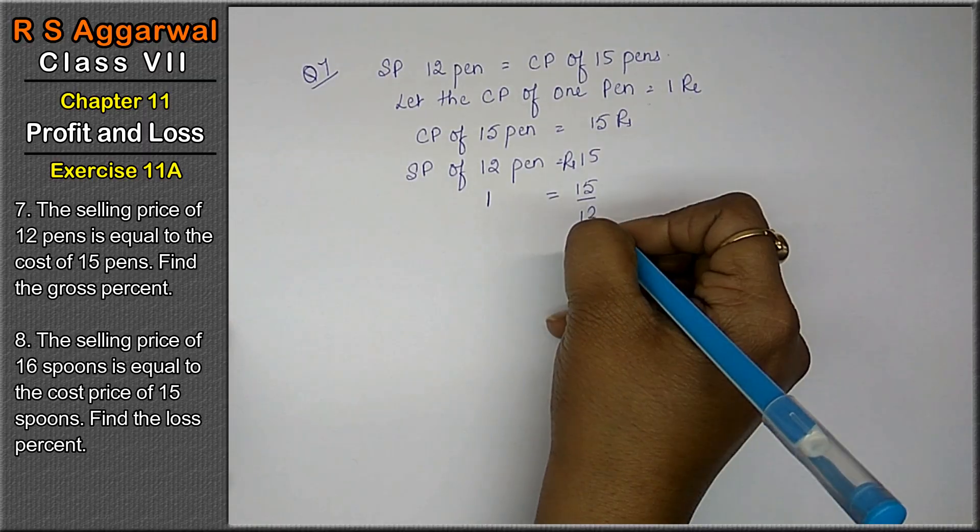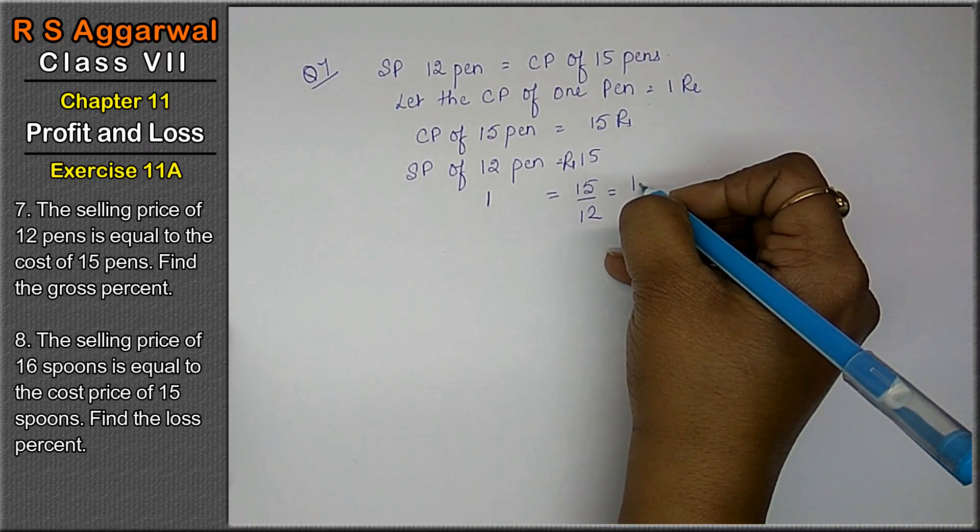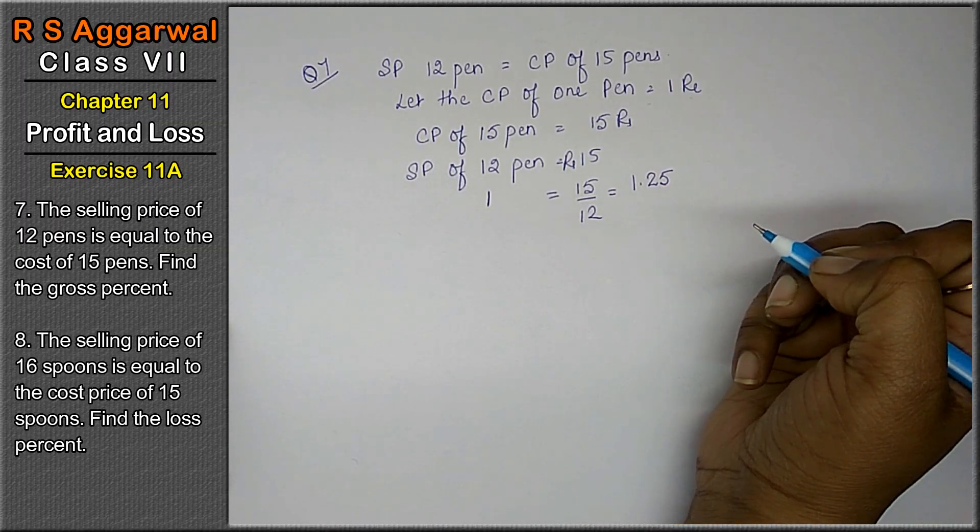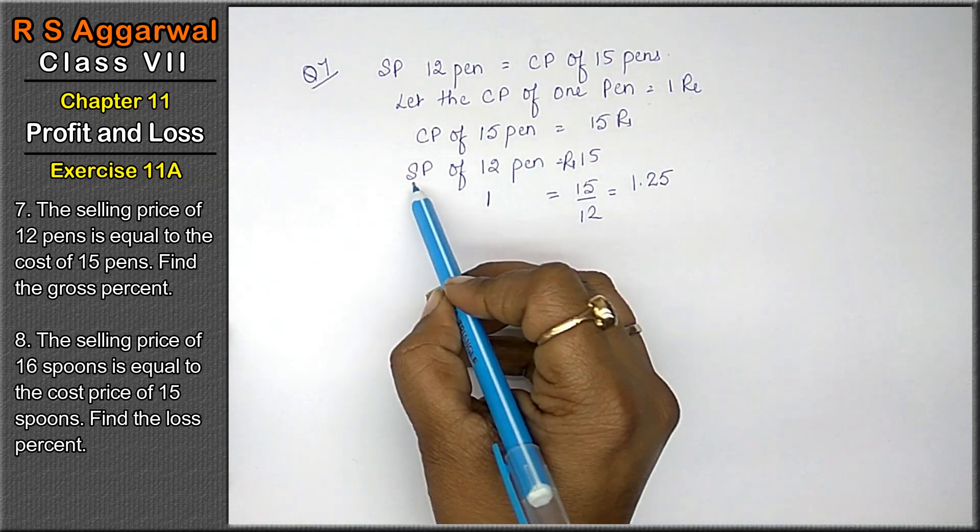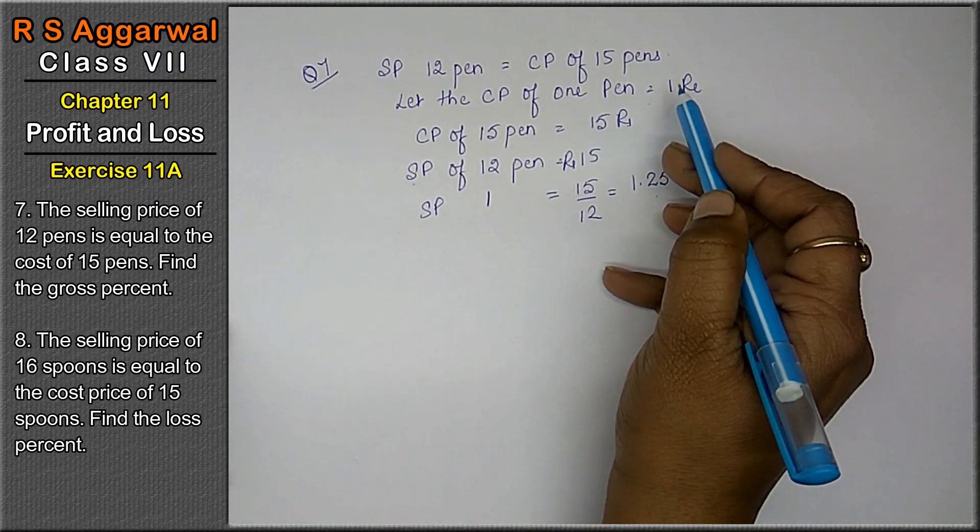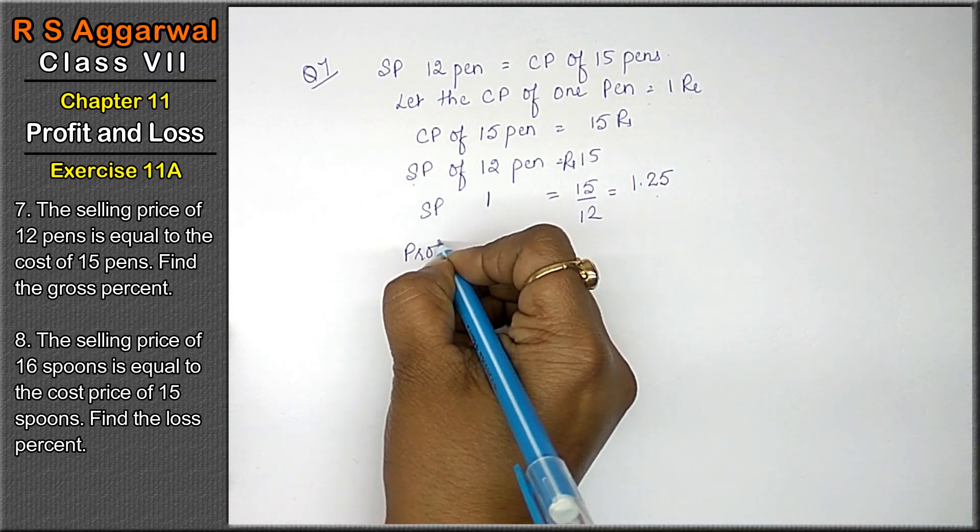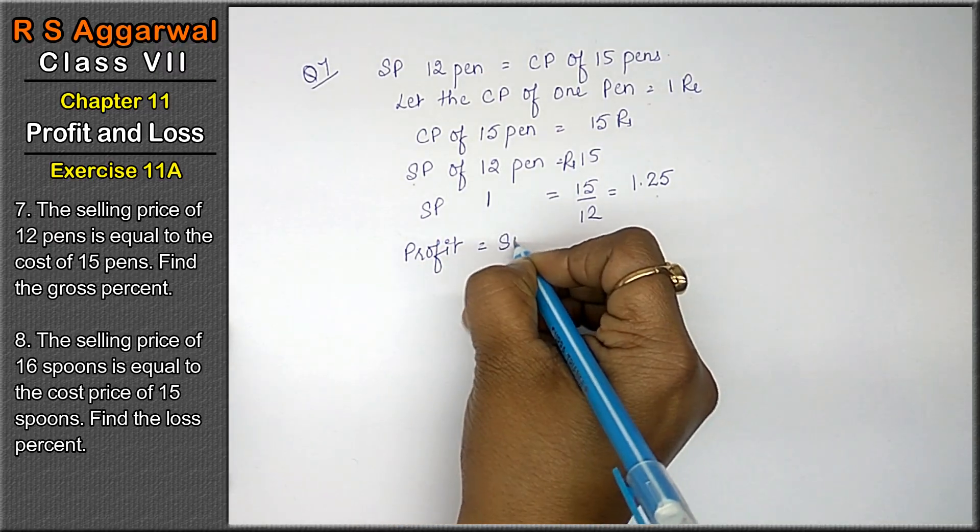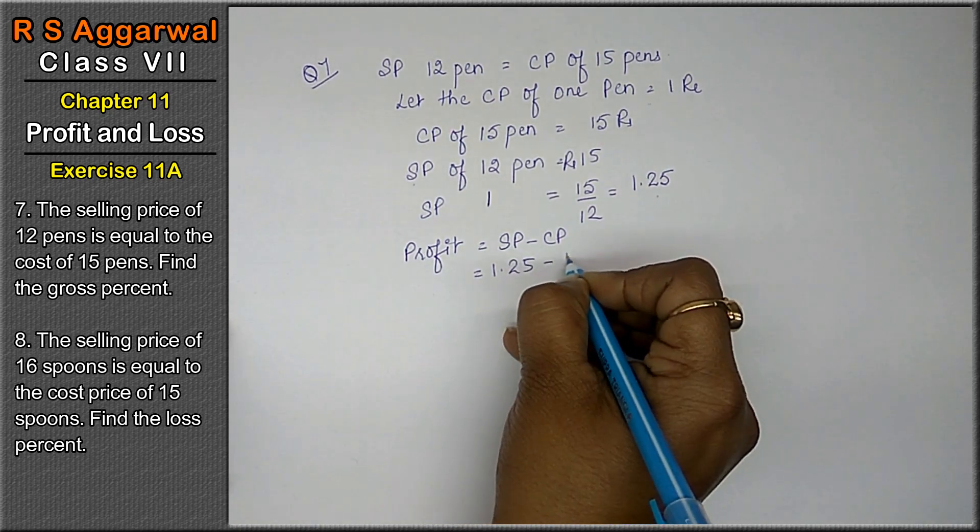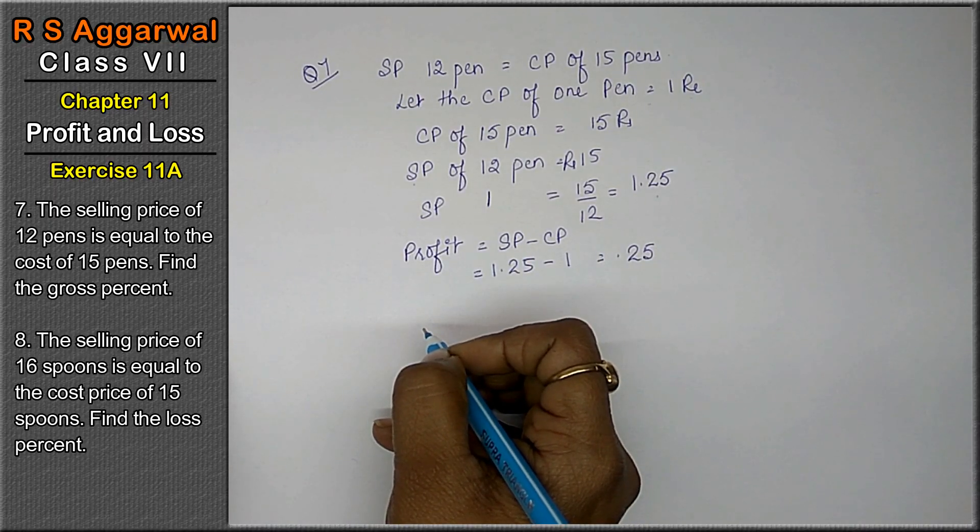So one pen's selling price is 15 upon 12, which is 1.25. The selling price is 1.25 rupees and cost price is 1 rupee. That means selling price is more, so we have profit. Profit formula is selling price minus cost price: 1.25 minus 1 equals 0.25 profit.